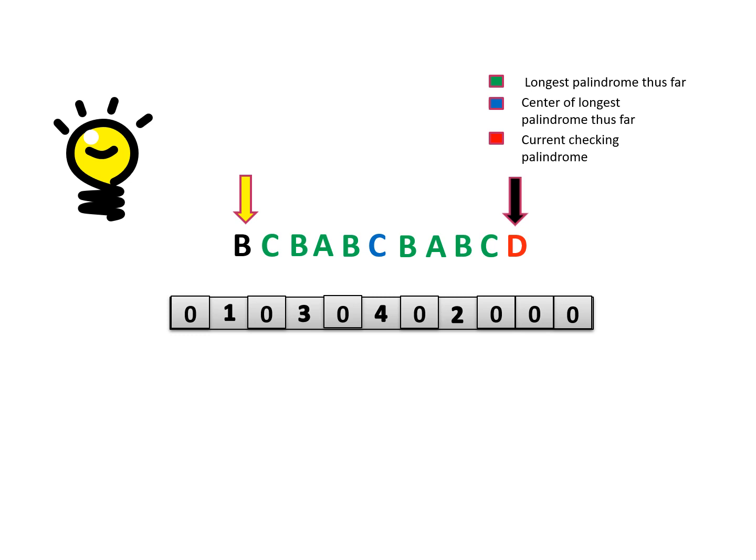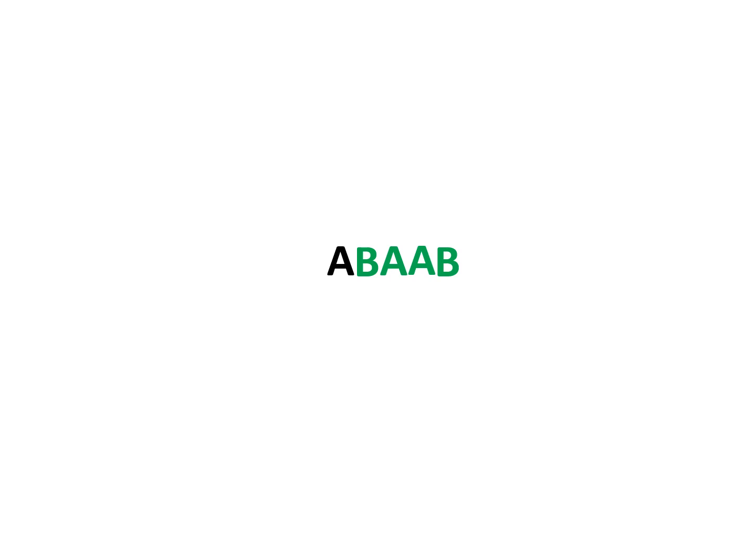We have used a string of odd length. But if we use an even-length string, we may get an issue, because the center of an even palindrome like BAAB falls between characters. To handle this, we insert a special character between every character to make every string odd in length. If we proceed with the algorithm we have seen, we can get the longest palindrome, and the only thing we have to do at the end is remove the special characters.